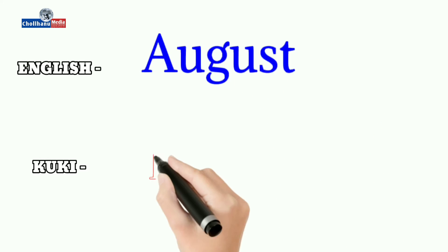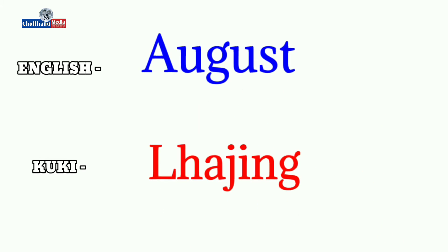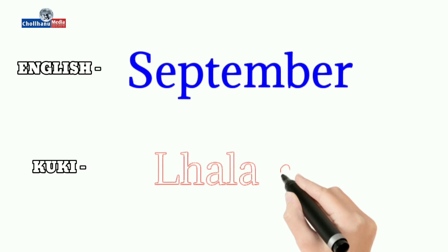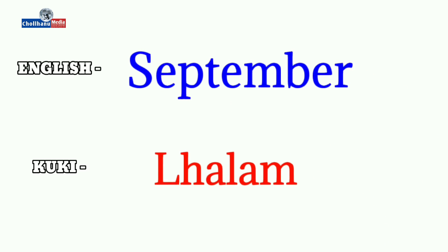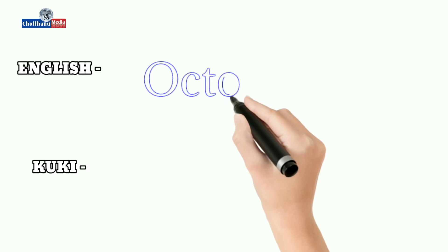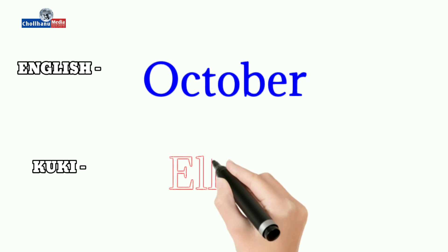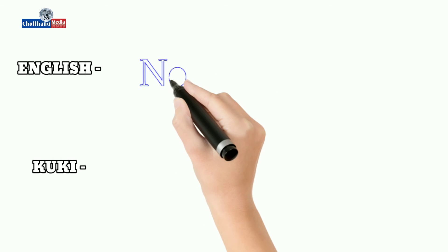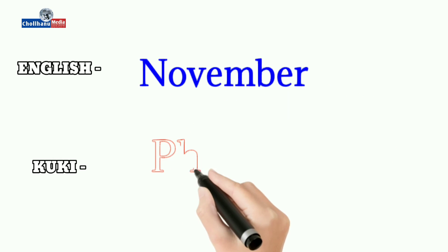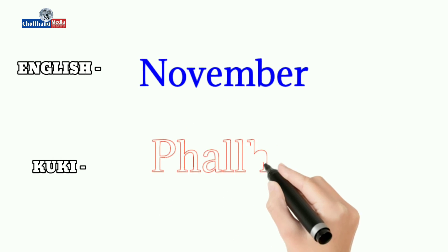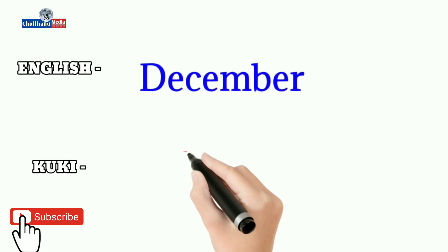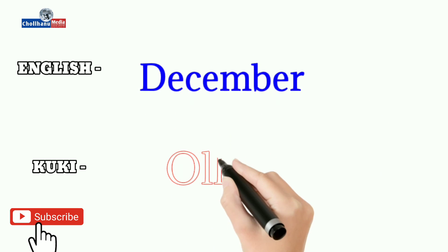August: Plazing. September: Thalam. October: Elha. November: Paltha. December: Oltha.